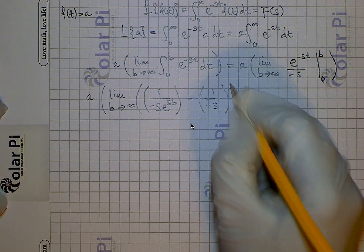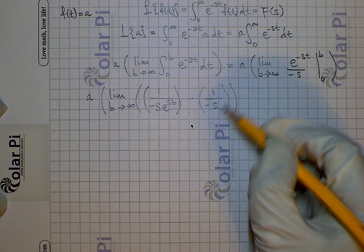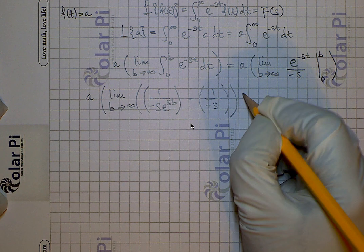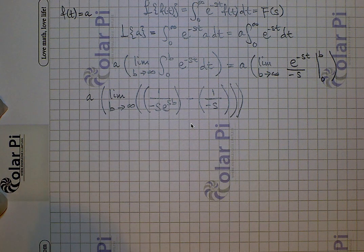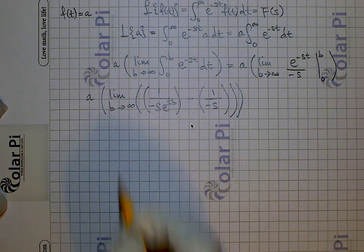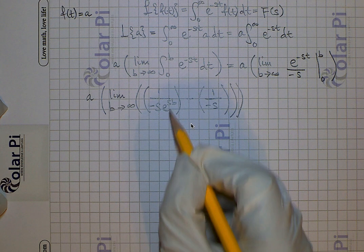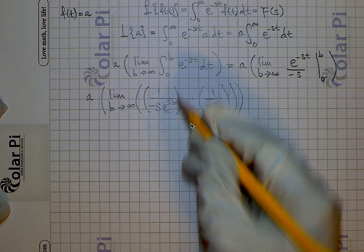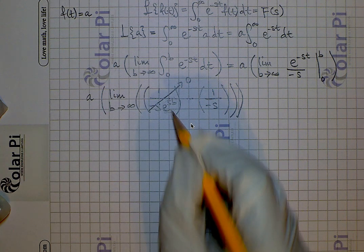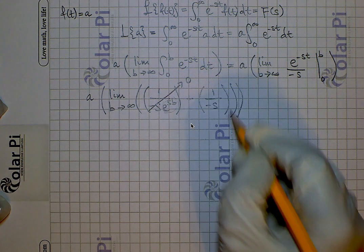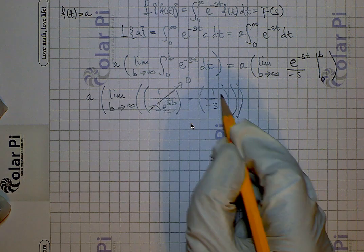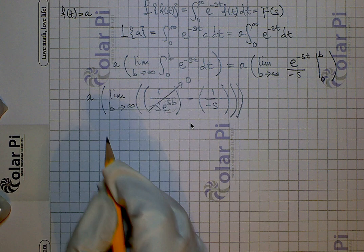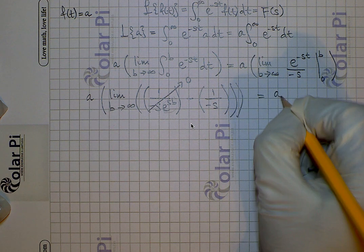This limit applies to everything, but the second term does not have a b in it, so it's not affected by the limit of b going to infinity. As b goes to infinity, since e to the sb grows without bound, we get 1 over a continually larger and larger number, so this term converges to 0. We're left with negative of 1 over negative s, which is just 1 over s, and multiplying by a gives us a over s.